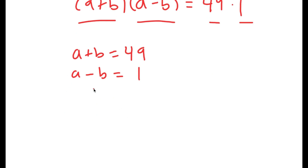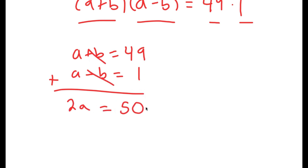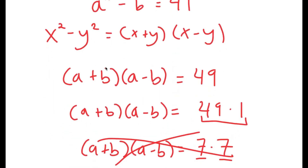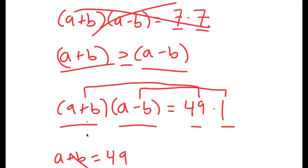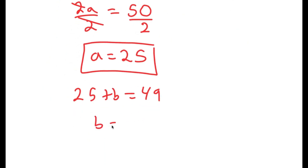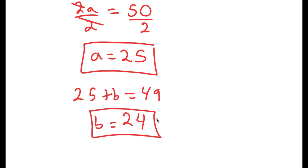What we have here is a system of equations, and I'm going to add them. a plus a is 2a, b and negative b cancel out, and 49 plus 1 is 50. So I get that 2a is equal to 50, and if I divide both sides by 2, I get a is equal to 25. Now that we know a is equal to 25, and we said that a plus b is equal to 49, this means 25 plus b is equal to 49, and b is equal to 49 minus 25, which is 24. So a equals 25 and b equals 24.